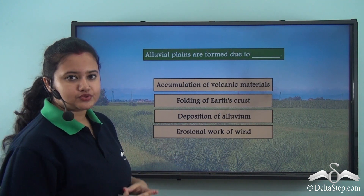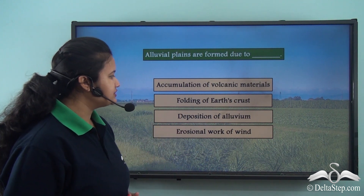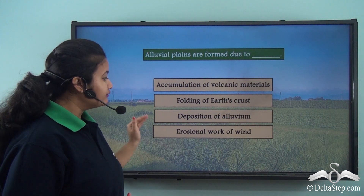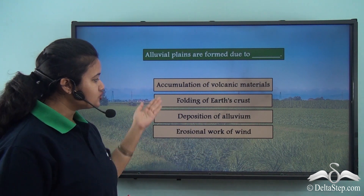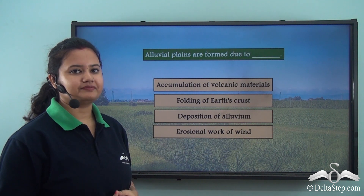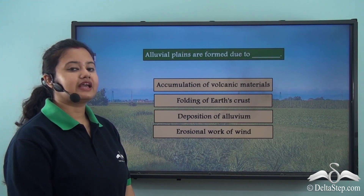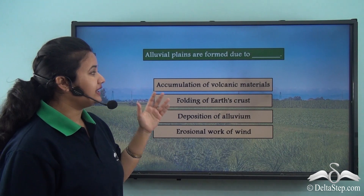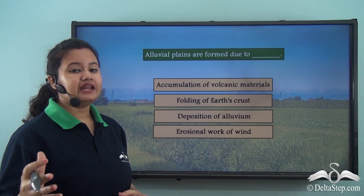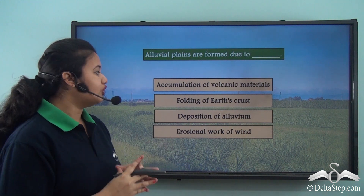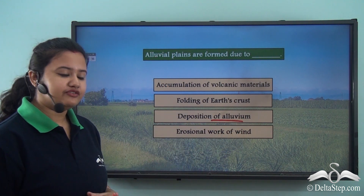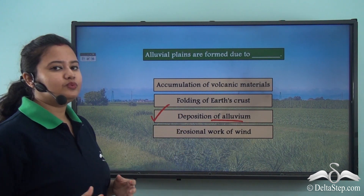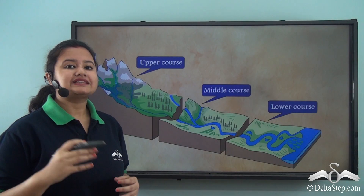Let's answer this objective question: alluvial plains are formed due to — accumulation of volcanic materials, folding of the Earth's crust, deposition of alluvium, or erosional work of wind? As we just discussed, alluvial plains are a type of depositional plain formed due to deposition of alluvium brought down by rivers. So the correct option is deposition of alluvium.